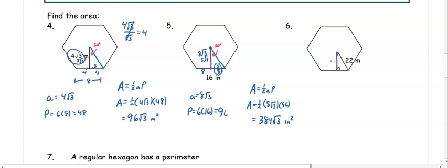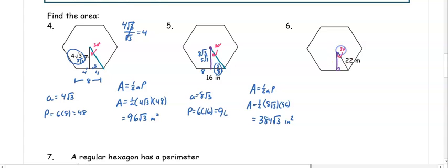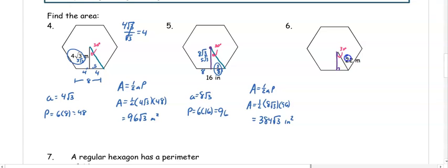In number six, when we draw in the apothem, the side is split in half and the angle is 30 degrees. This time we are given the full side length of 22. We divide 22 by 2 to get s equals 11.